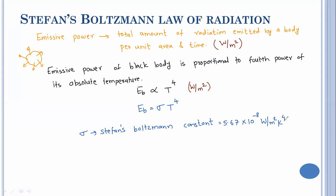Now, what do we mean by a black body? There can be a black body or a white body. A white body reflects all the energy, while a black body absorbs all the energy. That is why in summer we avoid black-colored clothing — because it absorbs all the energy falling on it. For a black body, emissivity is equal to one; for a white body, emissivity is equal to zero.